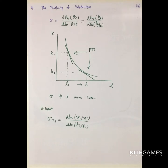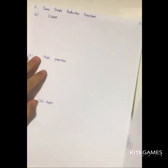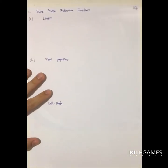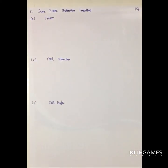Next, we will take a look at some simple production functions. In utility maximization, the indifference curve types were four. Now we also have four simple production functions.